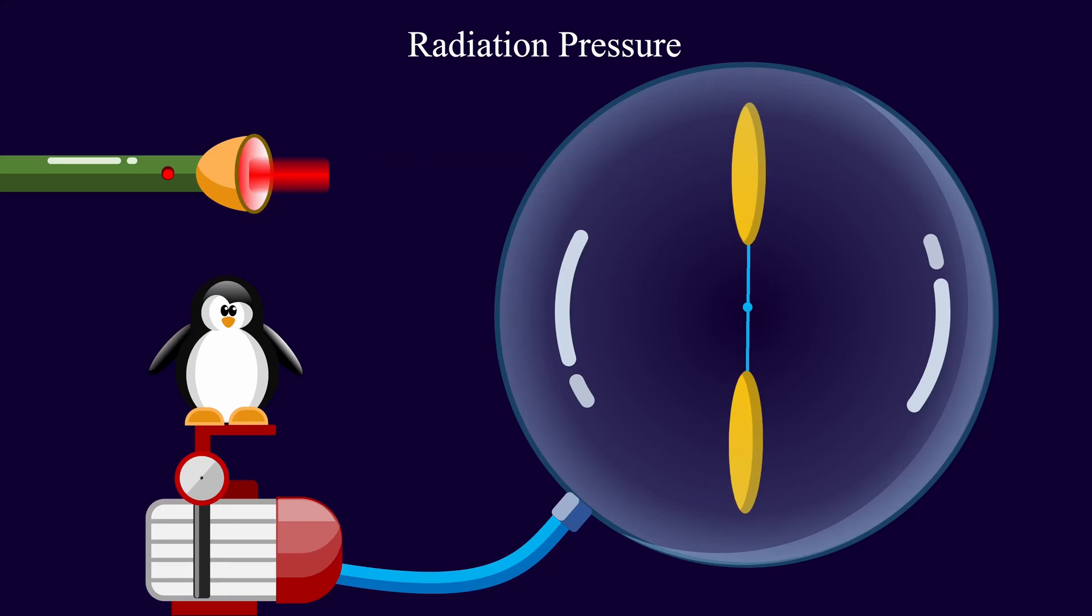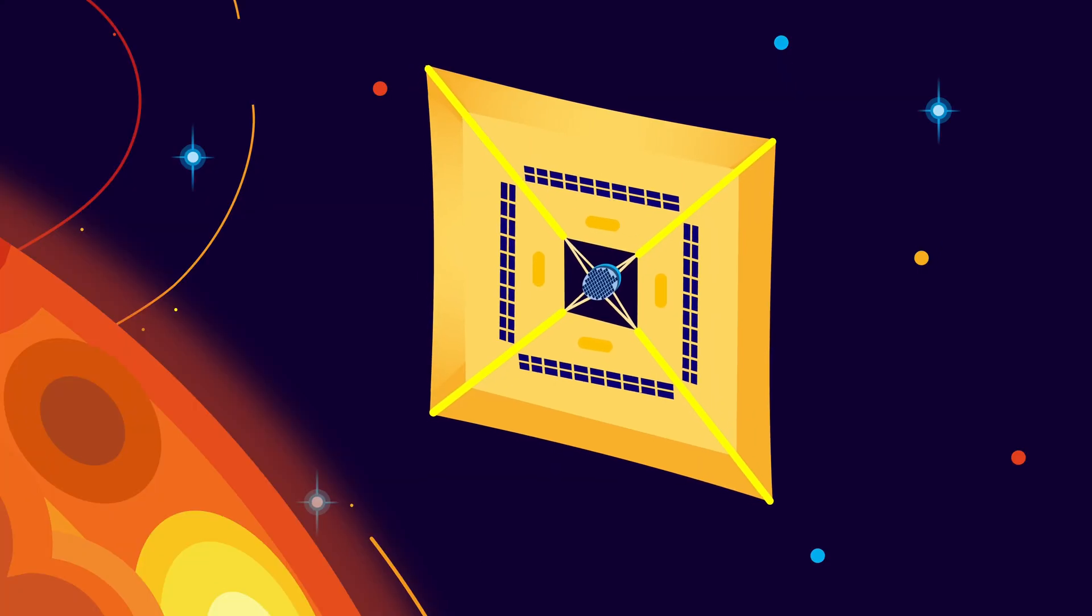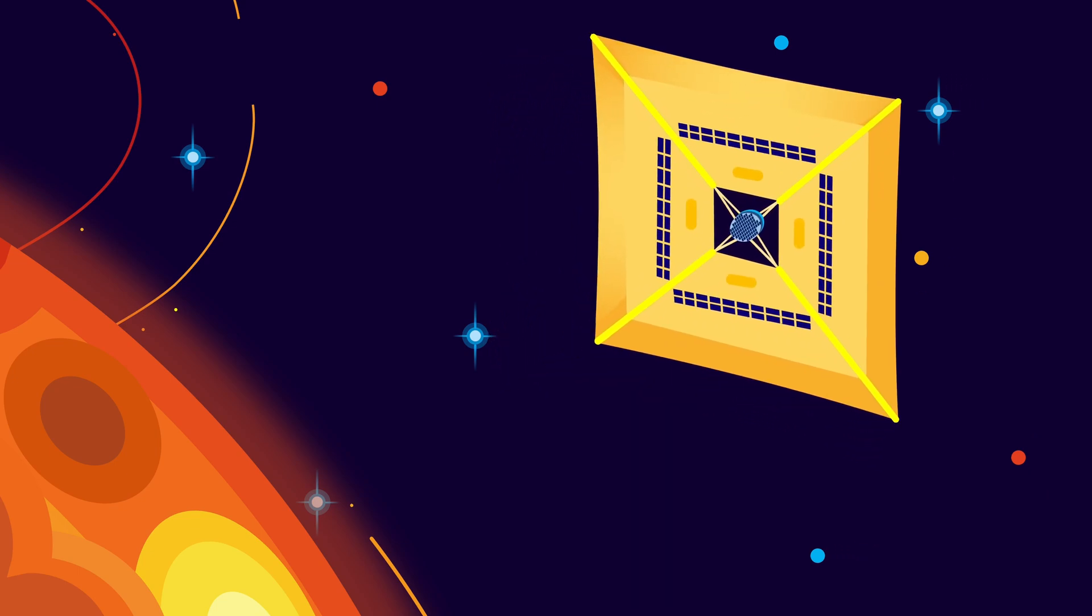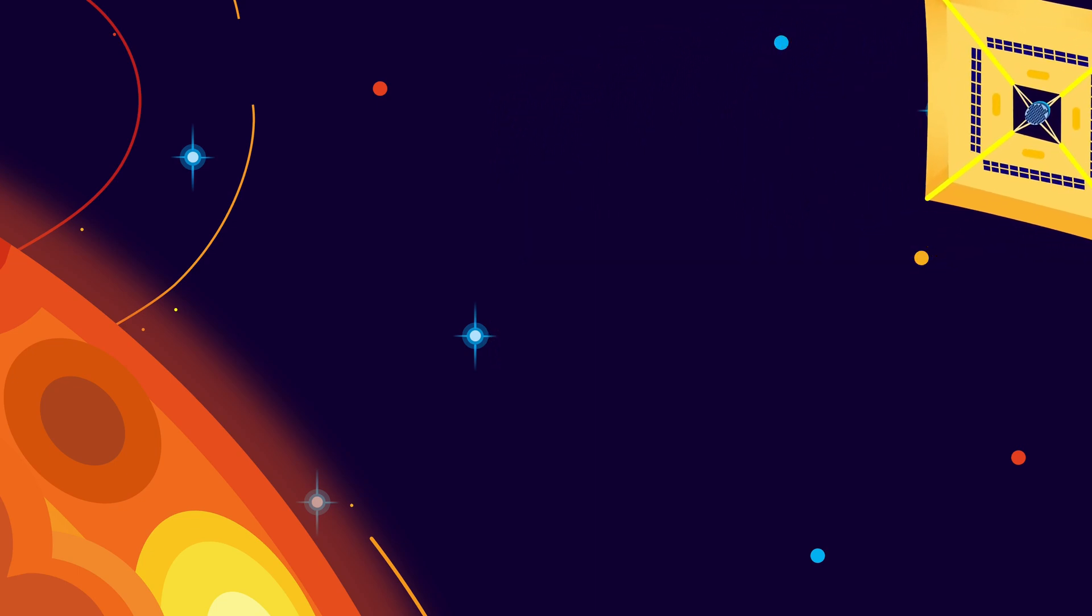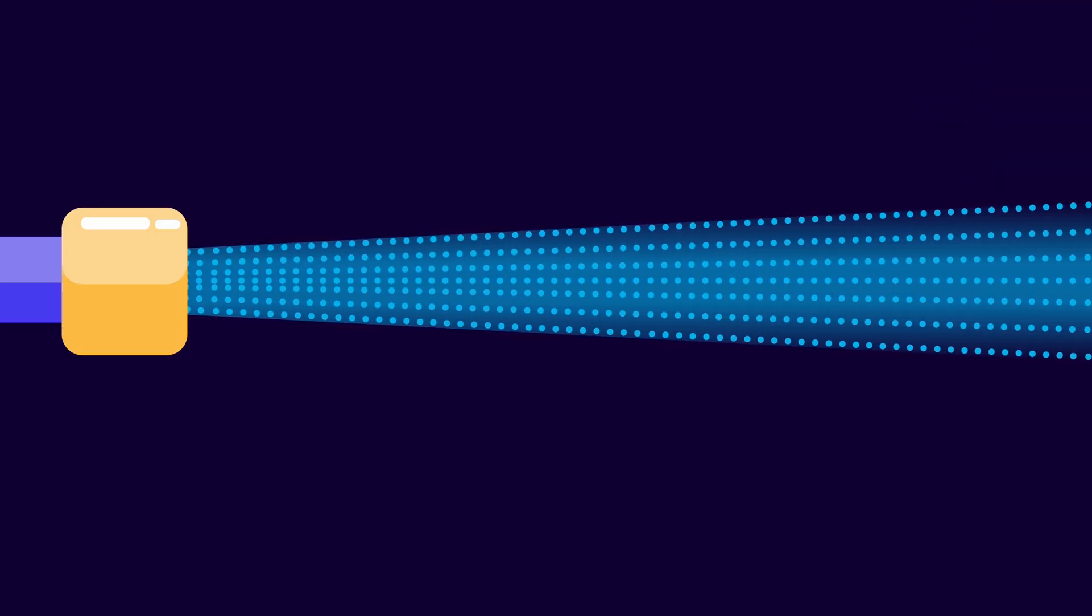Light pushes on things. We know this. Solar cells, for example, harness the pressure from sunlight to propel through space. But photons, the particles of light, don't have any mass.